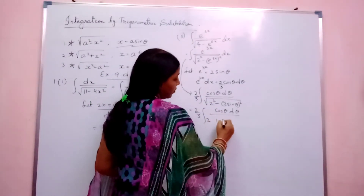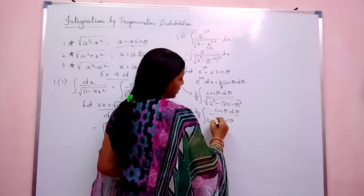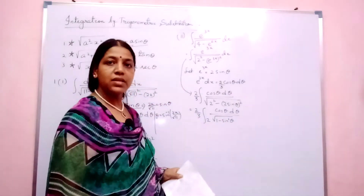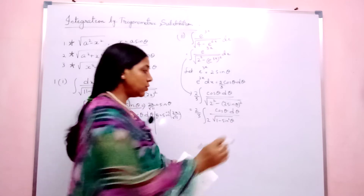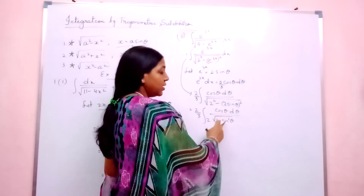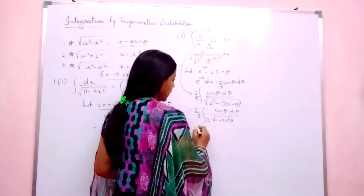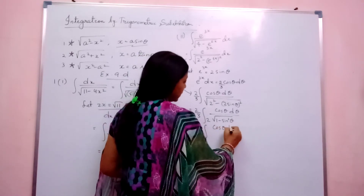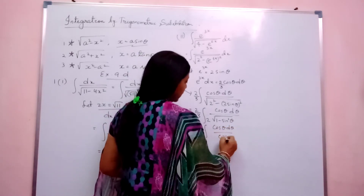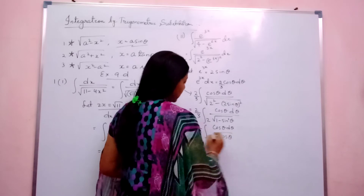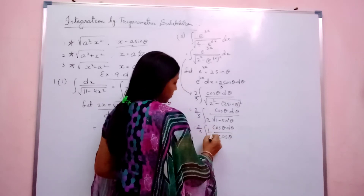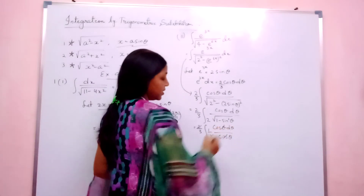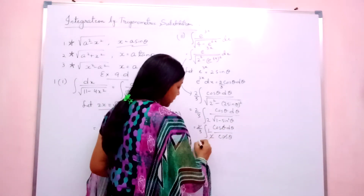What remains is 1 minus sin squared under the root. Now 1 minus sin squared theta root is cos squared theta root, and cos squared theta root is cos theta. So I will write 2 by 3 integration of cos theta d theta divided by cos theta. The 2 in the denominator and the 2 cancel, and this cos theta and that cos theta also cancel.